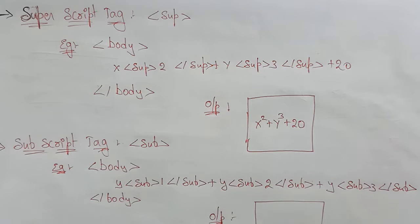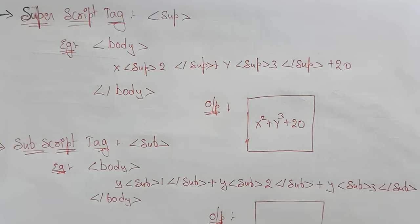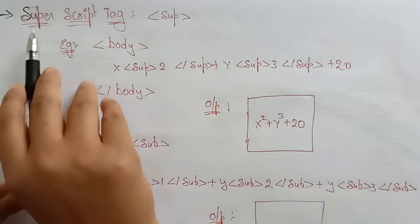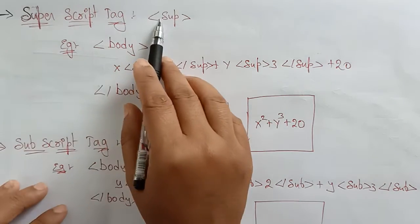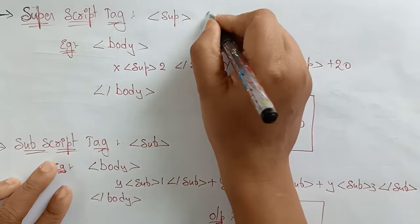Hi students, let's continue with the tags in HTML, one part of web technologies. Coming to the remaining tags in HTML, the next one is the superscript tag. Superscript means it represents a power — whatever letters or numbers you want to represent in mathematical form, you use a superscript.